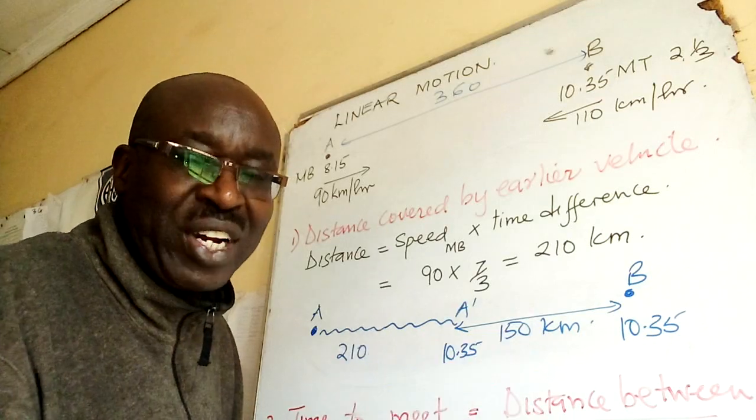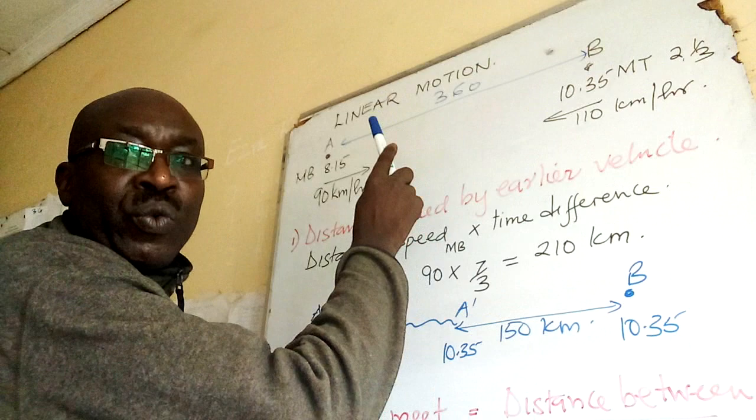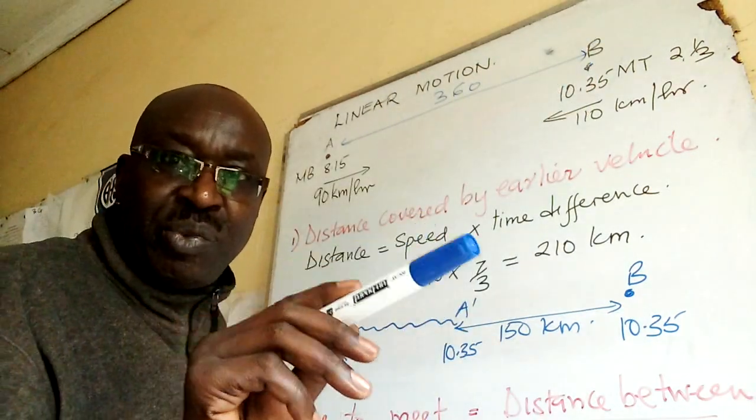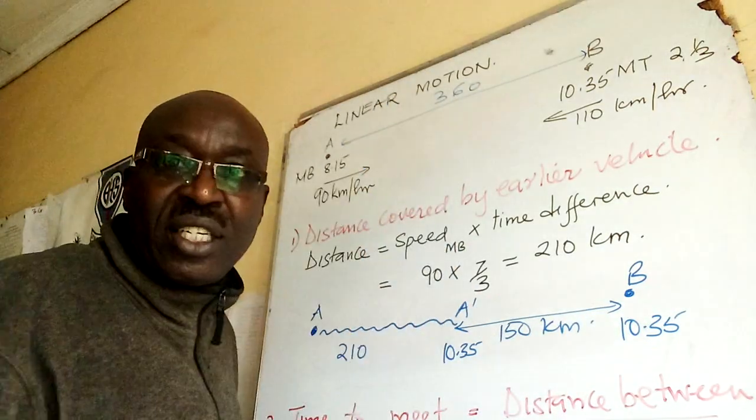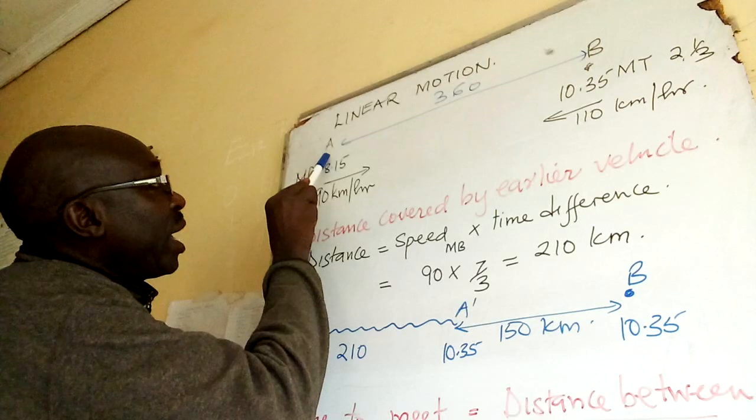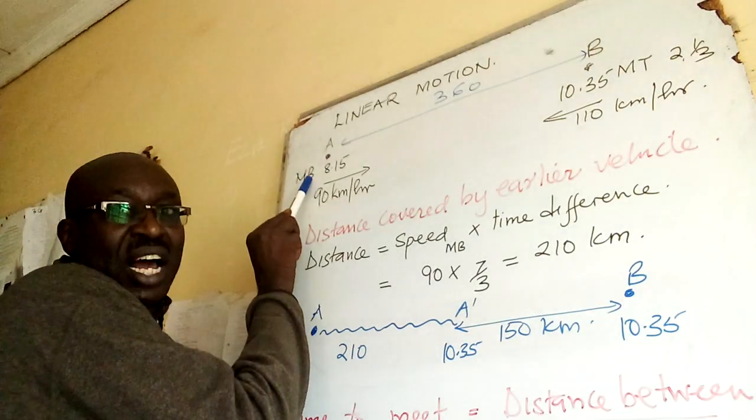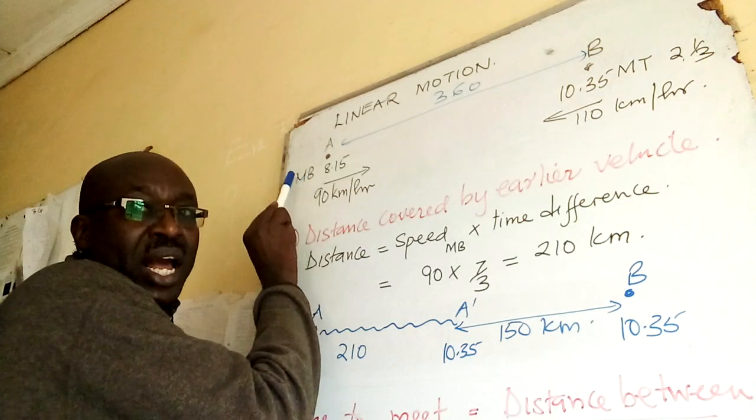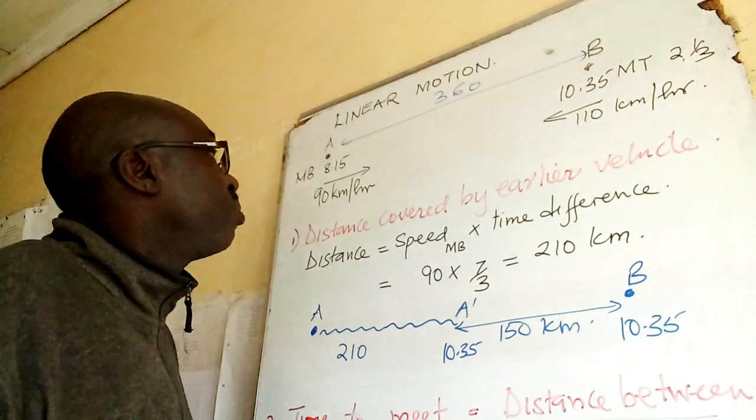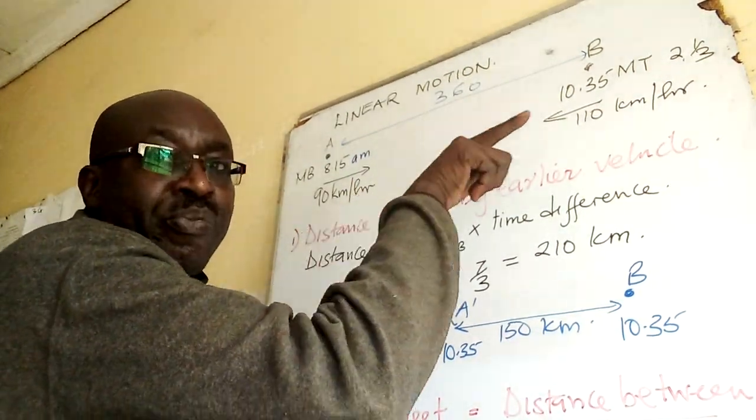So here we have a scenario. We are told that there is town A and there is town B. The distance between them is 360 km. Then we are told that from town A, a minibus leaves at 8:15 AM.